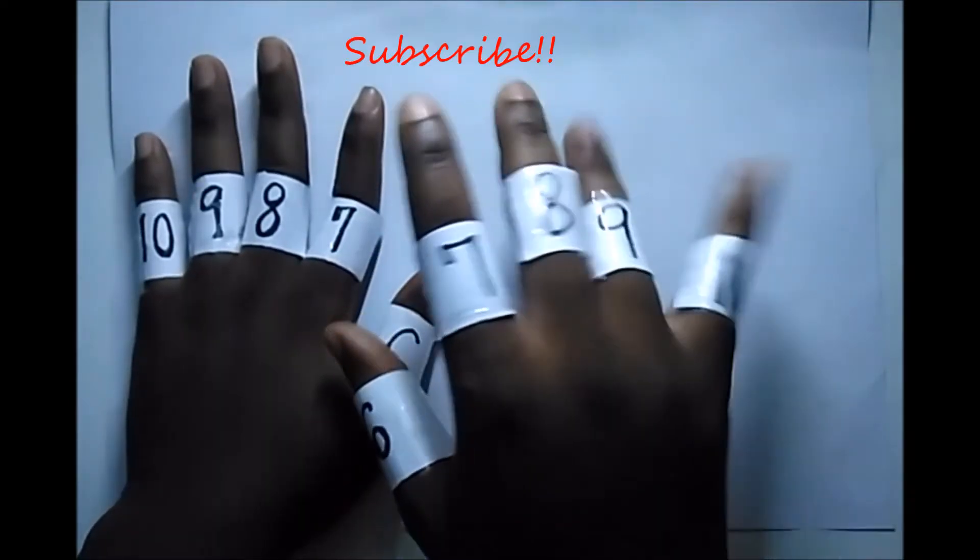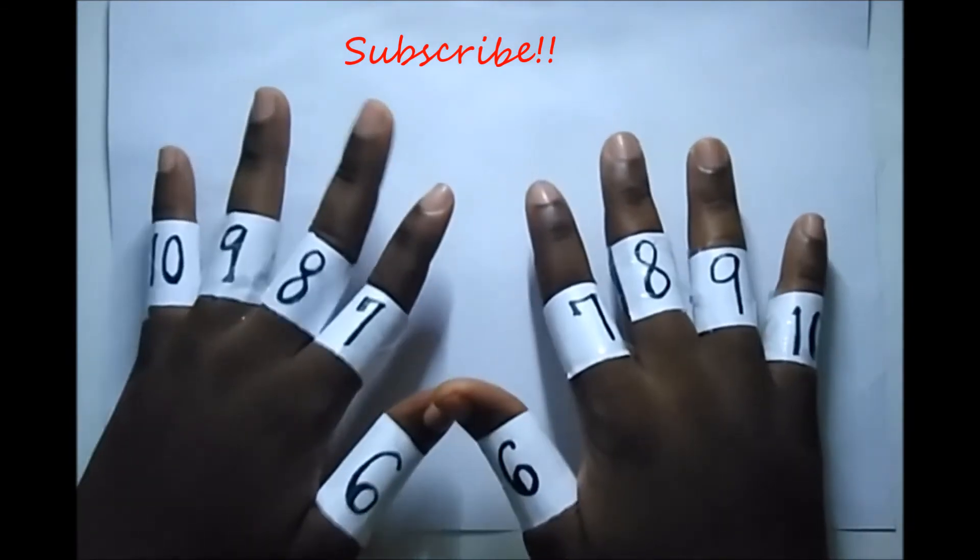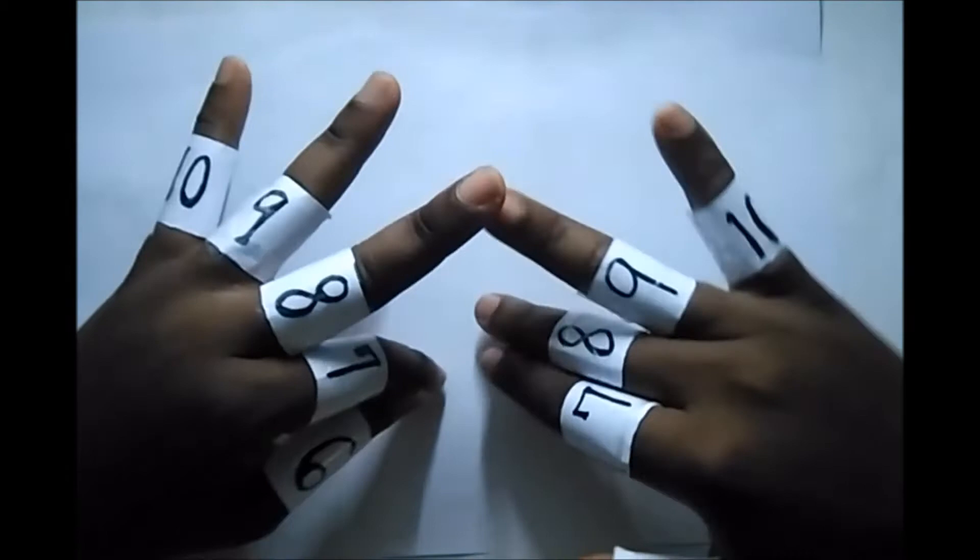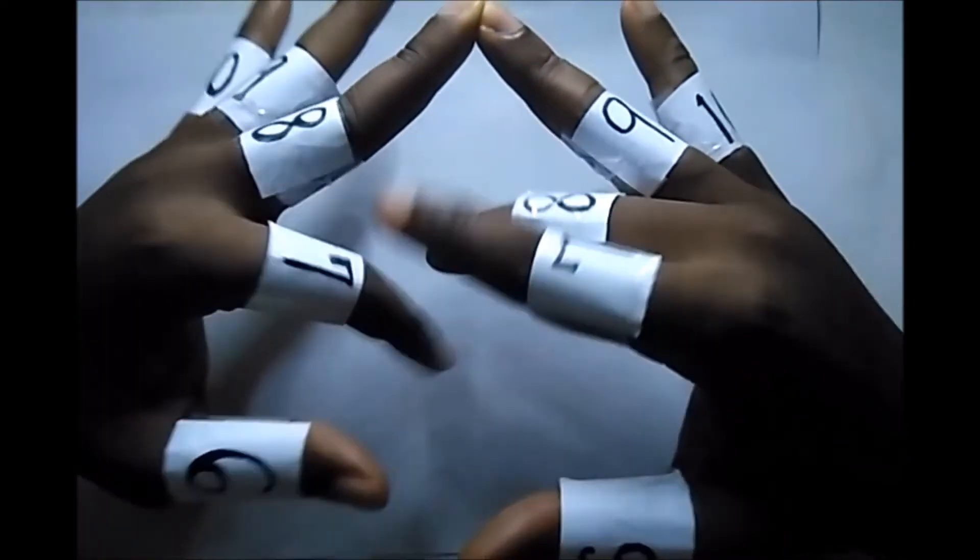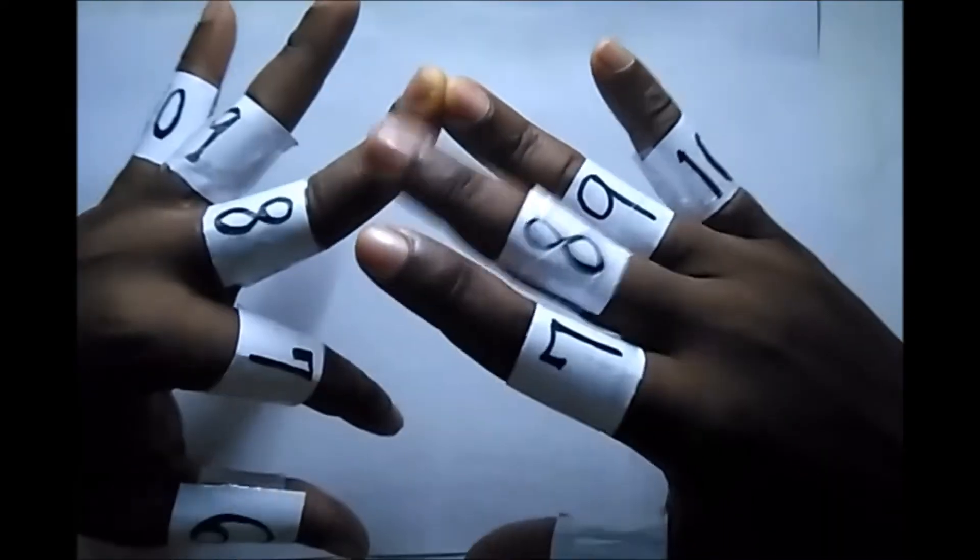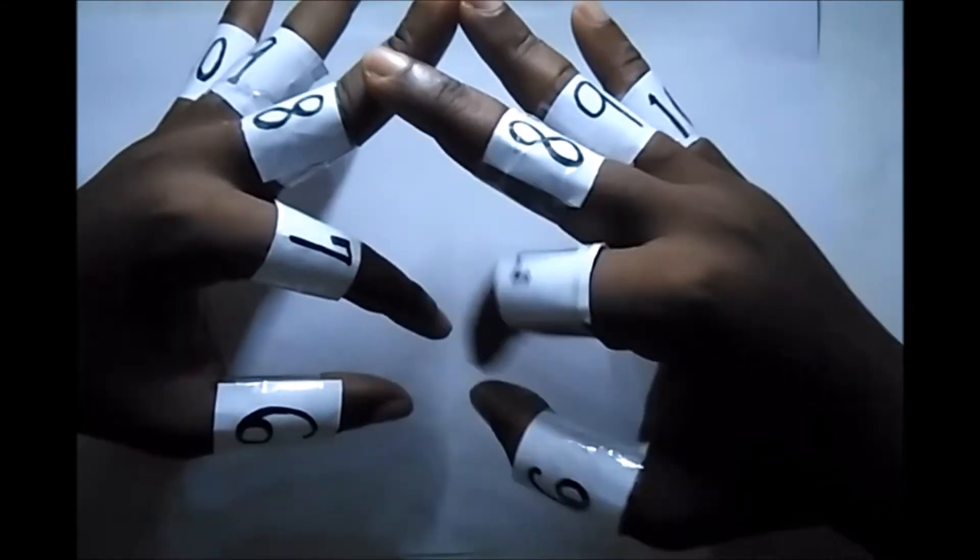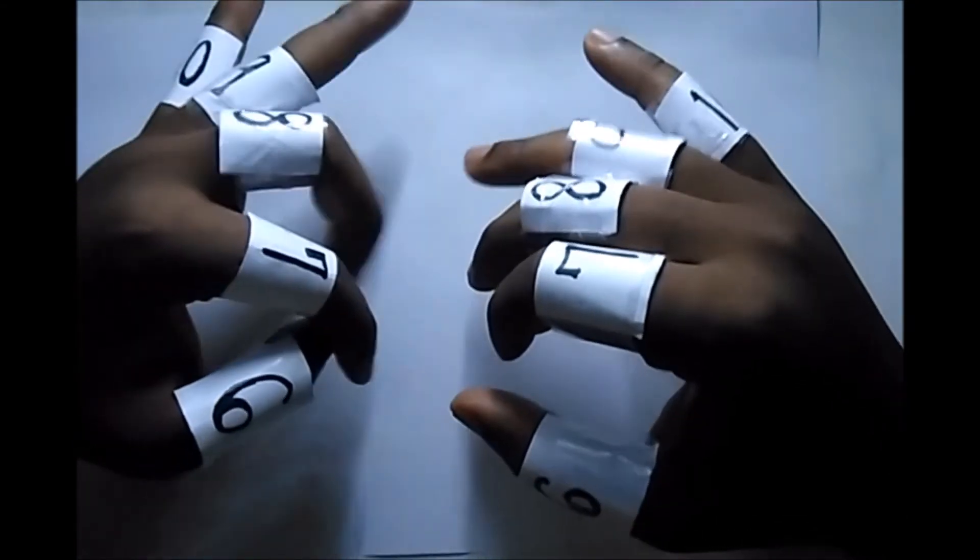Let's say we want to do eight times nine. This is finger eight, right? And this is finger nine. So we'll place this together. Let's count the fingers that are below these particular two fingers and also count the two fingers as well. So let's count: we have one, two, three, four, five, six, and seven.